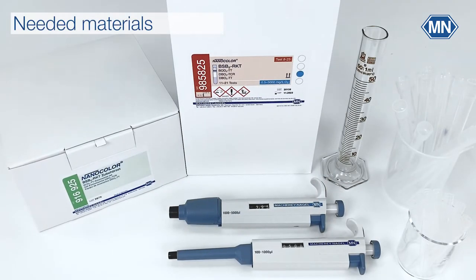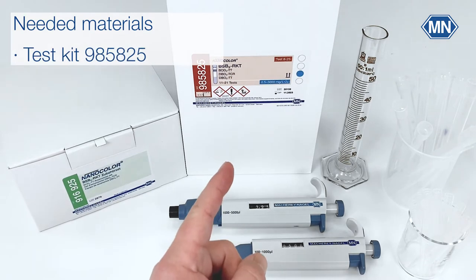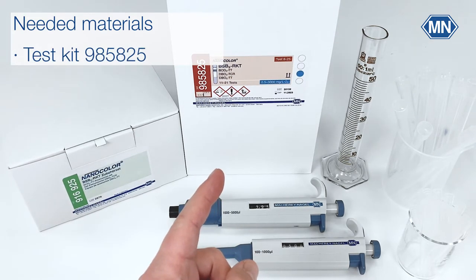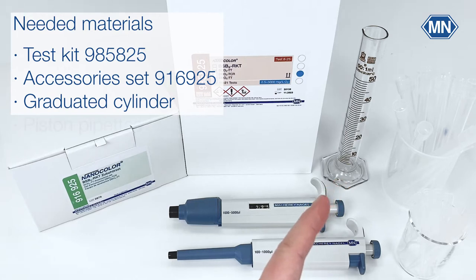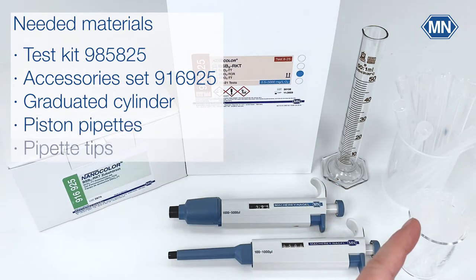To perform the BOD5 tube test you need the test kit itself which is sufficient for 22 determinations, the BOD5 TT accessory set, graduated cylinder and piston pipettes with pipette tips.